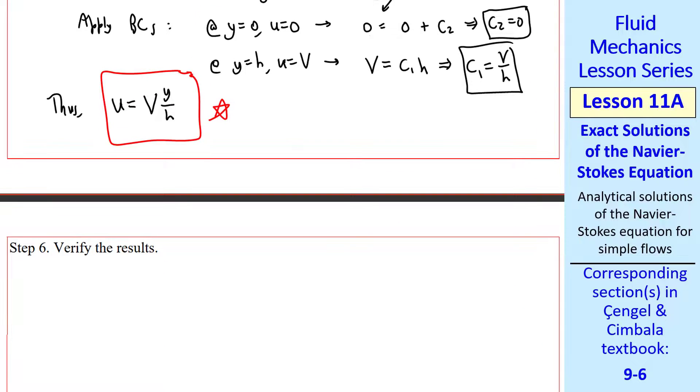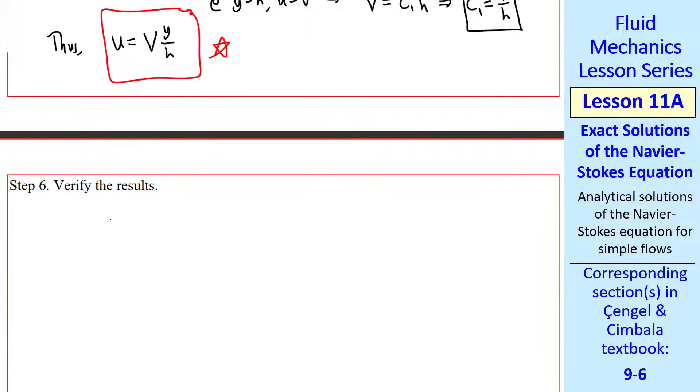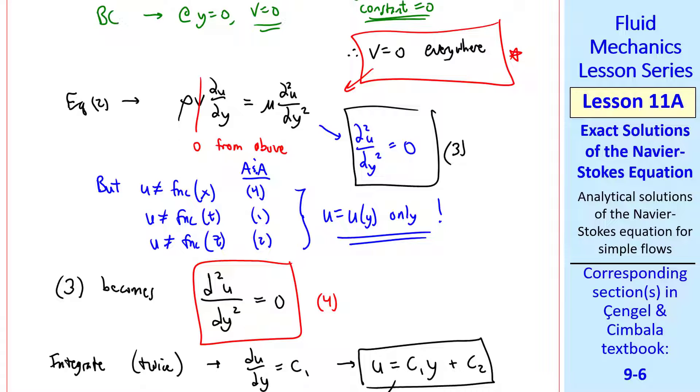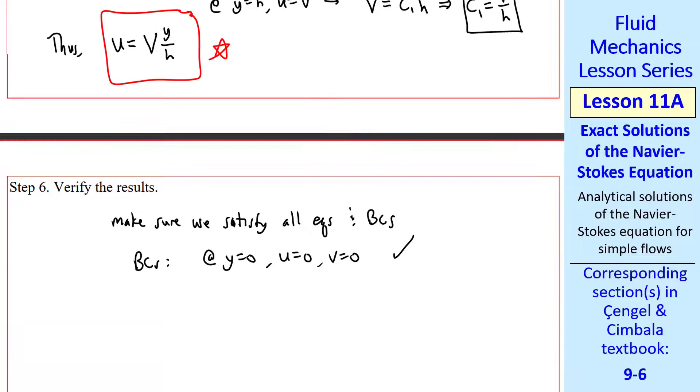Step six: verify the results. Make sure we satisfy all equations and boundary conditions. I'll just look at the boundary conditions. At y equals zero, u equals zero and v equals zero. That's true, and we showed v was zero everywhere. When you plug in y equals h, we get u equals v. So this is also satisfied.